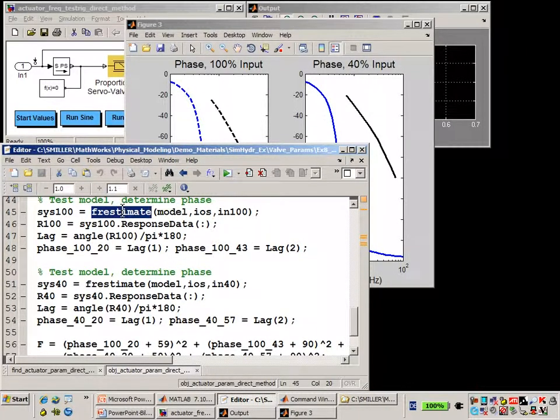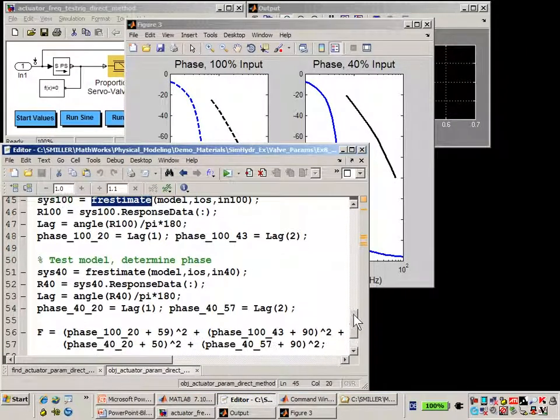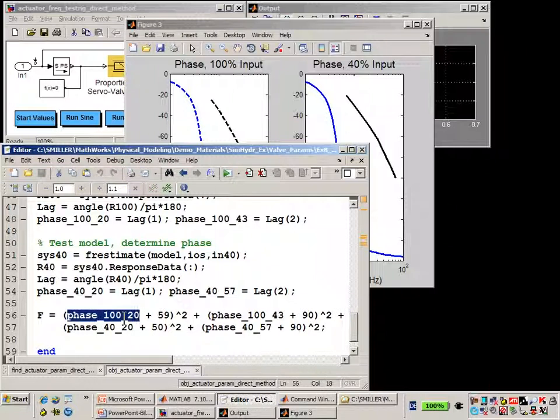Using FR estimate, we'll generate or calculate the phase at those four different points. And then down below, you can see the custom objective function that we've created where we are comparing the frequencies measured in the frequency response in the simulation with the values from the data sheet.